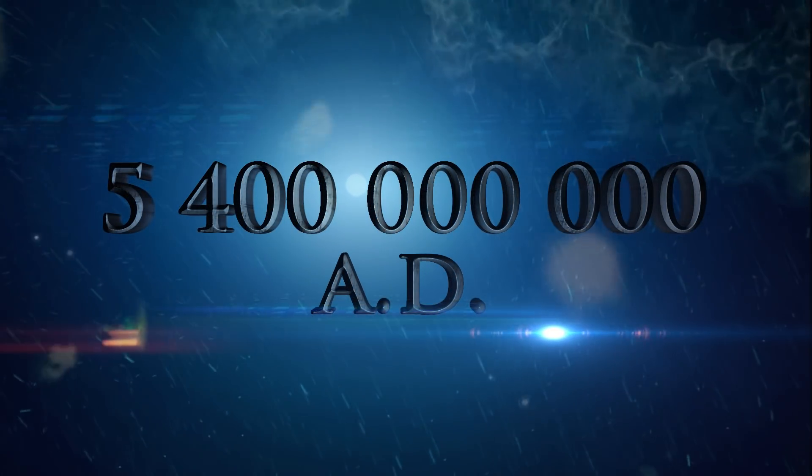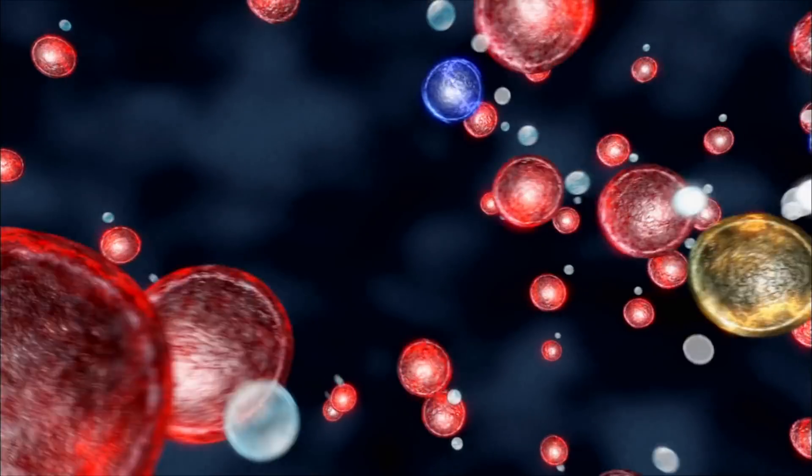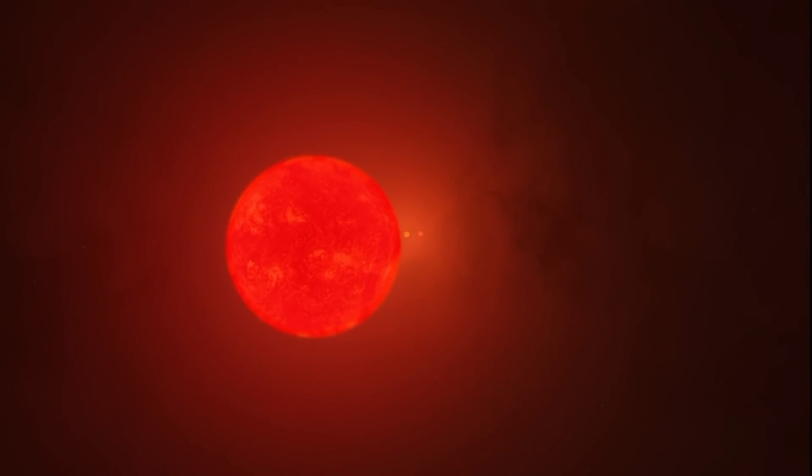Five point four billion years from now, with the hydrogen supply exhausted at its core, the Sun leaves the main sequence and begins to evolve into a red giant.